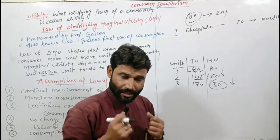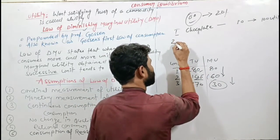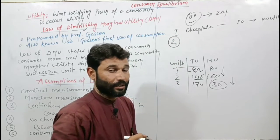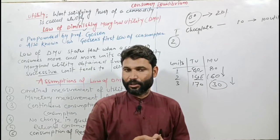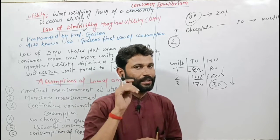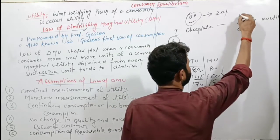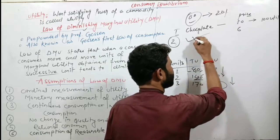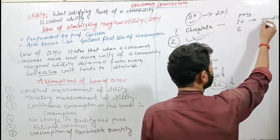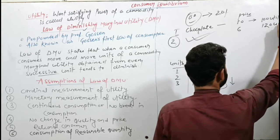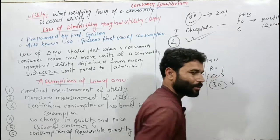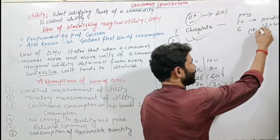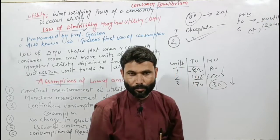He had 10 rupees left and ordered a second chocolate. The shopkeeper offered the second chocolate for only 6 rupees. Mr. Chikki consumed the second chocolate and got 120 utils — more than the 100 utils from the first. So the law was violated here — utility increased instead of diminishing.